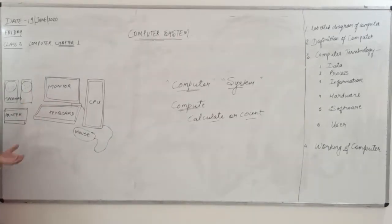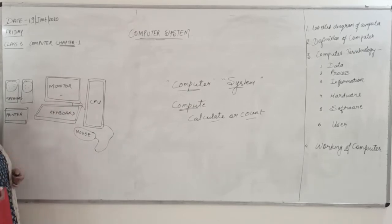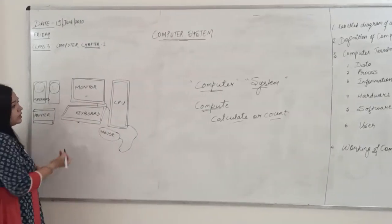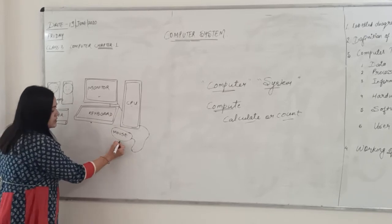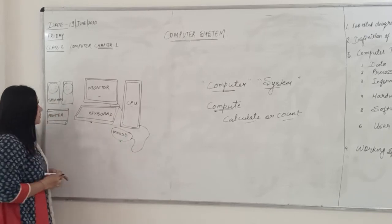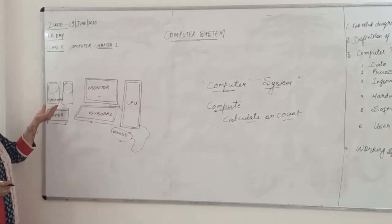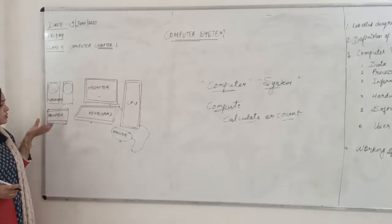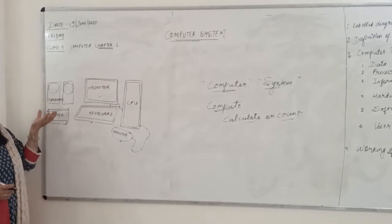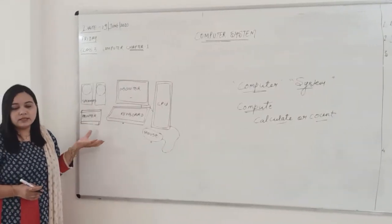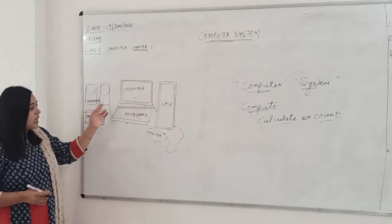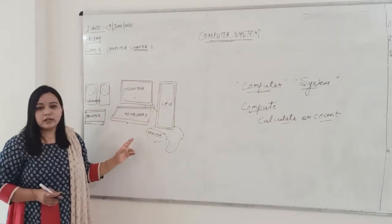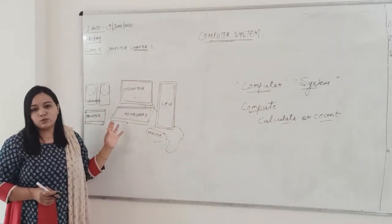To understand this, we need to see the labelled diagram of a computer system. In this diagram we can see the monitor, the keyboard, the CPU, the mouse, the printer, and the speakers. The printer and speakers are optional components — you may or may not have them — but the four core components are a must.